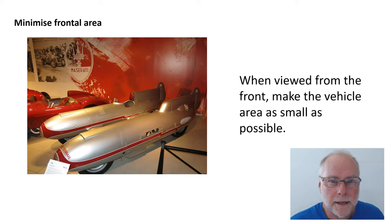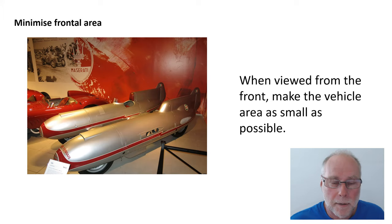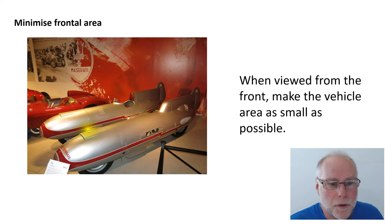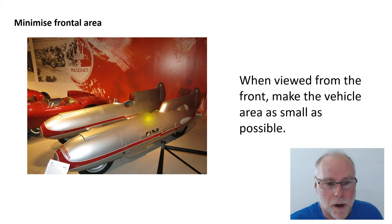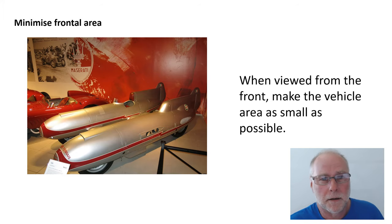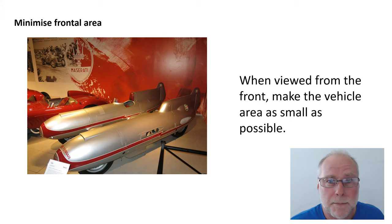We want to minimize frontal area. Total drag is drag coefficient multiplied by projected frontal area, so if we can halve the projected frontal area, we reduce total drag very substantially. There's an interesting vehicle with two bullet-shaped pontoons joined together — the driver sat in one, the engine was in the other — and if you looked at it from the very front you would see how little frontal area there was. In most vehicles, minimising frontal area simply means making the vehicle as small as possible in width and height.